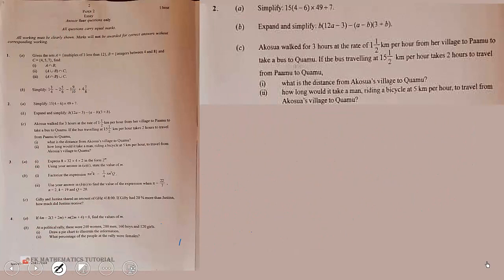For Part C: Akosya walks for three hours at a rate of one and a half kilometres per hour from her village to Pamu to take a bus to Creamer. The bus travelling at fifteen and a half kilometres per hour takes two hours to travel from Pamu to Creamer. We need to find the total distance from Akosya's village to Creamer.